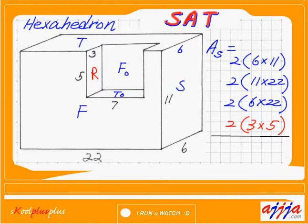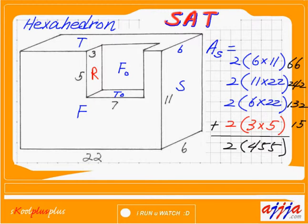Now all we have to do is calculate everything and add it together. Inside the parentheses: sixty-six, two hundred forty-two, one thirty-two, and fifteen. Just inside the parentheses: four hundred fifty-five. So four fifty-five times two — total: nine hundred ten square units.